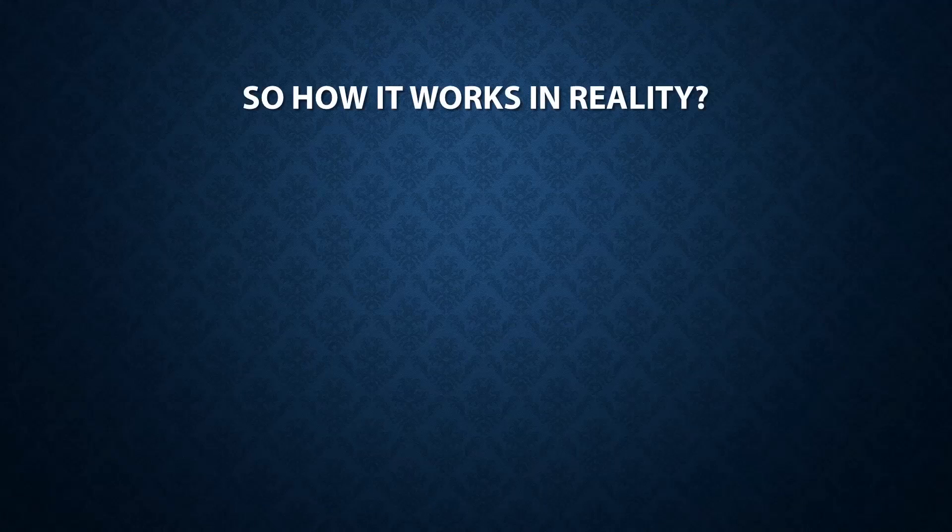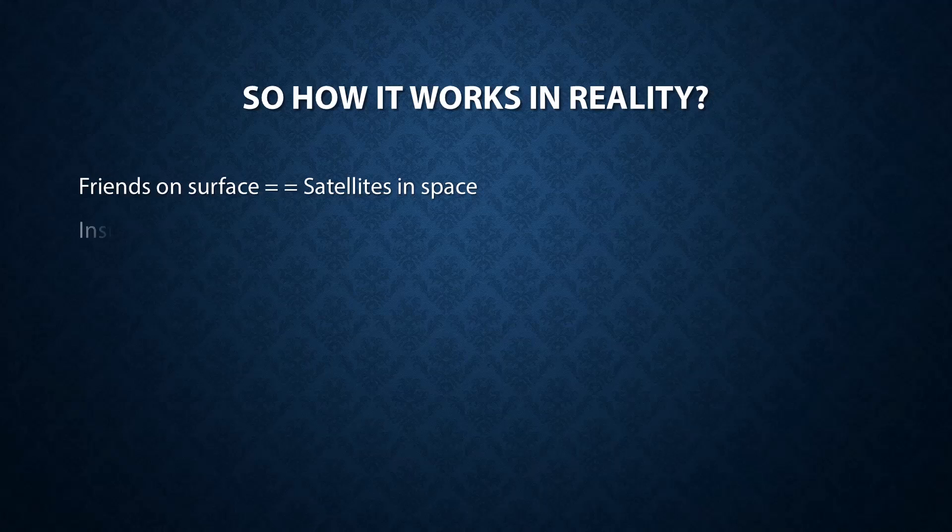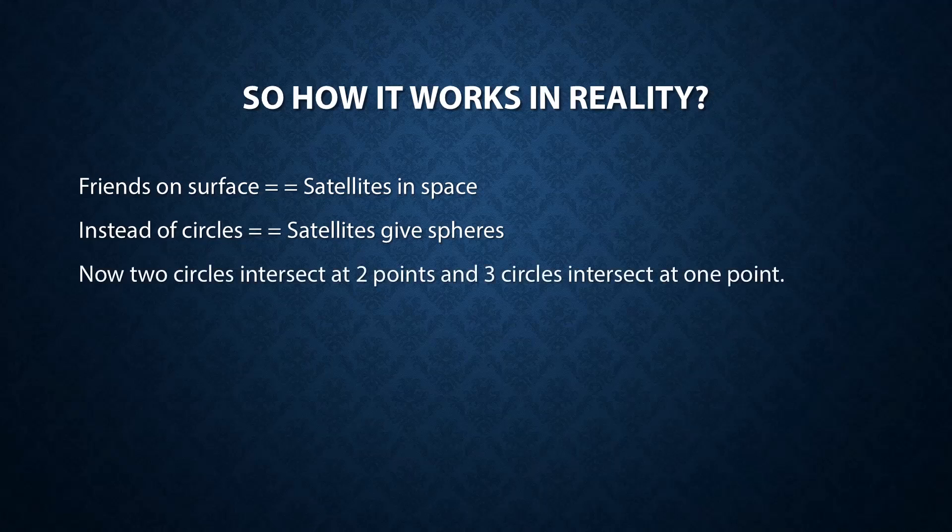So let us see how it works in reality. The friends on the surface is equivalent to the satellites in space. Instead of circles, the satellites give you spheres. The satellites can work around in a 3D space, so they will be giving a spherical location of the distance.